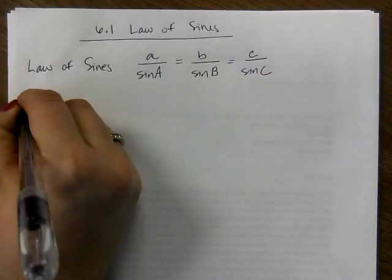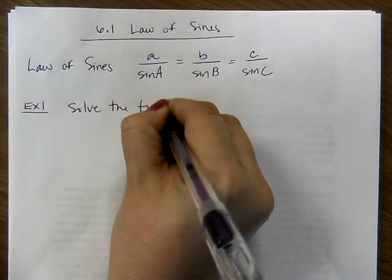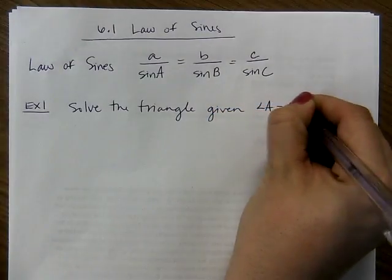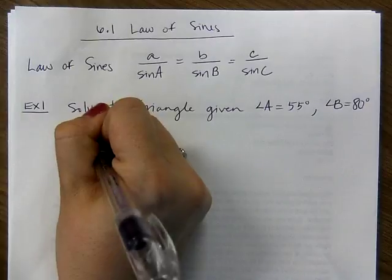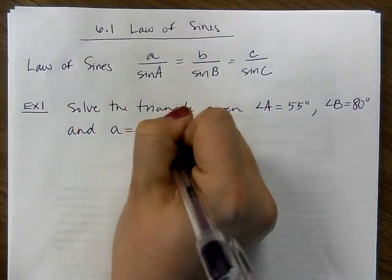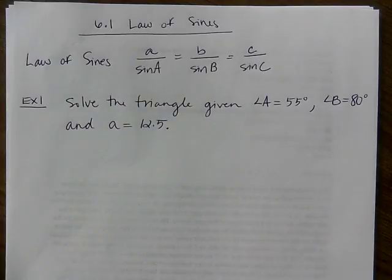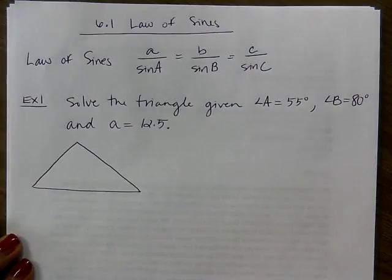Let's just begin with some examples. Solve the triangle given angle A is 55 degrees, angle B is 80 degrees, and side a is 12.5. The first thing you want to do is draw a triangle to get an idea of what's going on. It doesn't matter if it's drawn to scale.